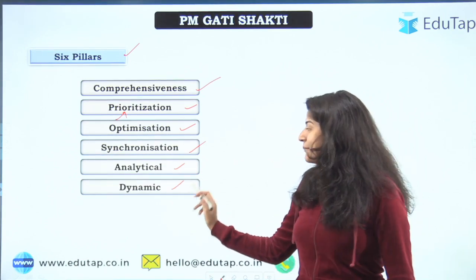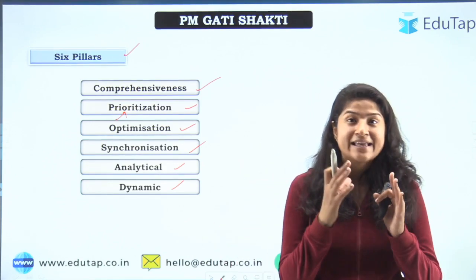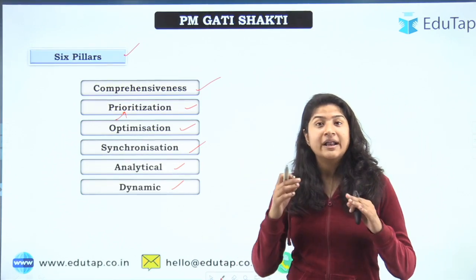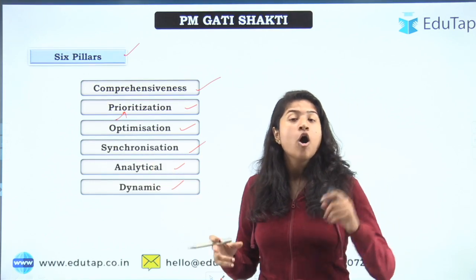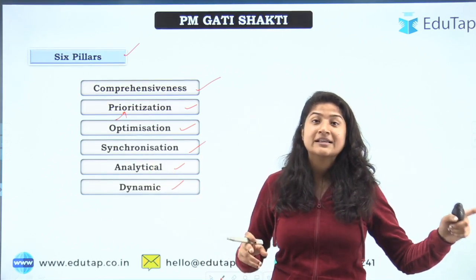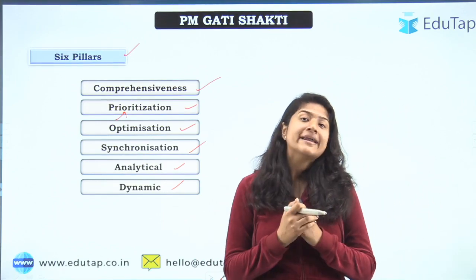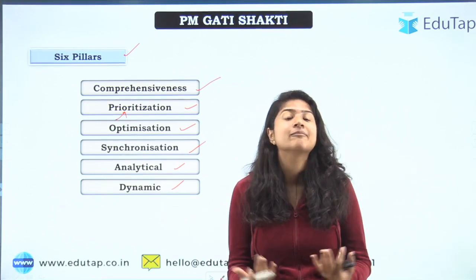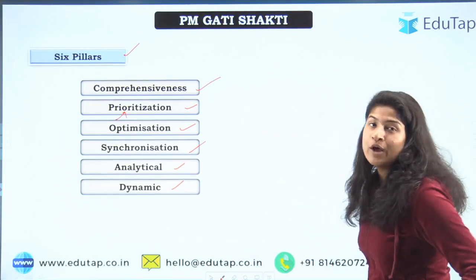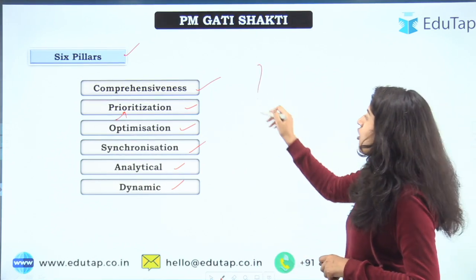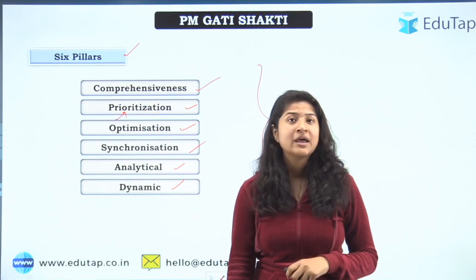The sixth and last pillar is dynamic. Dynamic means different things happening at the same time. Initially, only roads were made, but now optical fibers are being installed simultaneously while roads are also being made. So there is dynamic development — many things happening at one go. These were the six pillars of PM Gati Shakti Yojana.